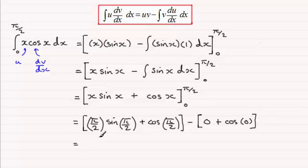So what have we got? Well, pi upon 2 times the sine of pi upon 2. Sine of pi upon 2 is 1. So we're just going to have pi upon 2 there. And then cosine of pi upon 2 is 0. So forget about that one. And then we've just got here the cosine of 0, which is 1. So we've got minus 1. And there's our answer.